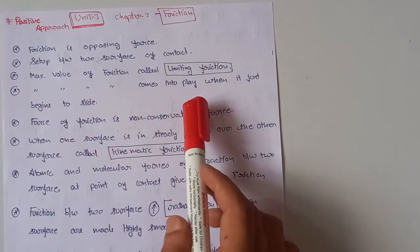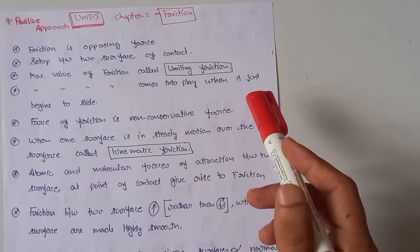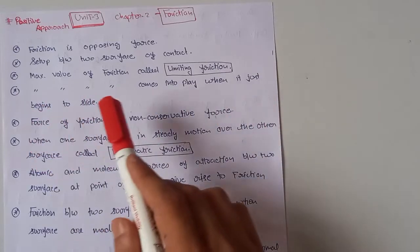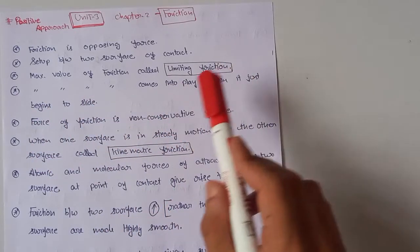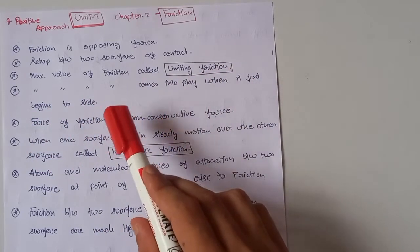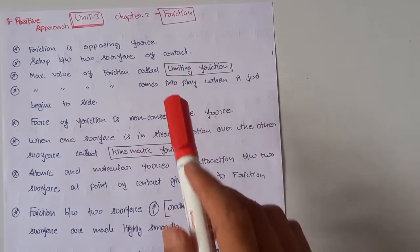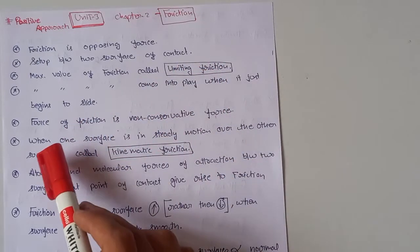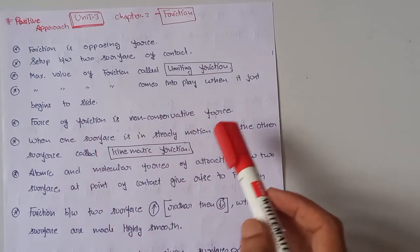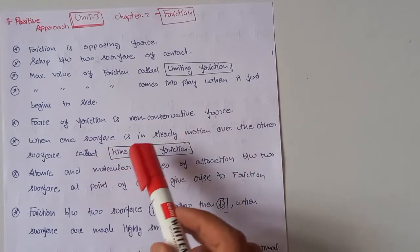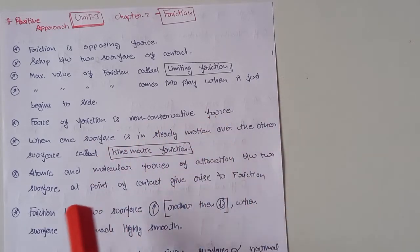The maximum value of friction comes into play when the surface just begins to slide — this is called limiting friction or static friction. Also, force of friction is a non-conservative force.